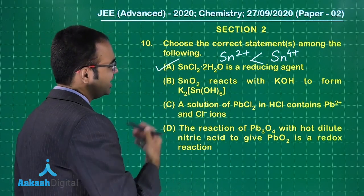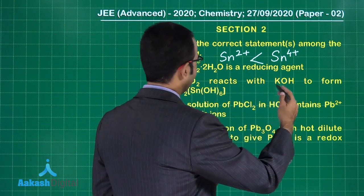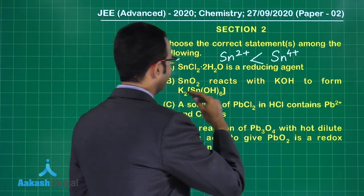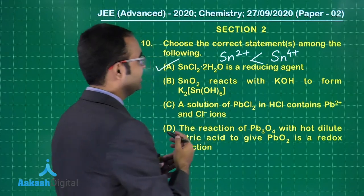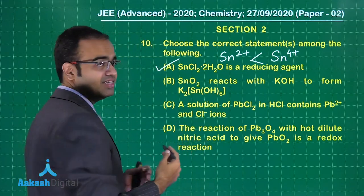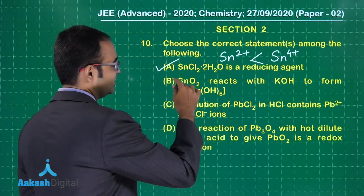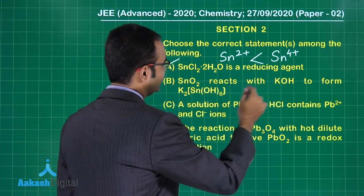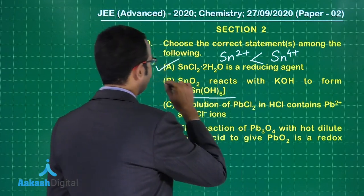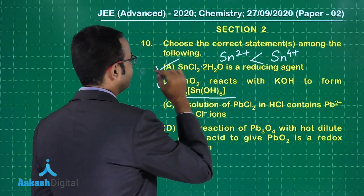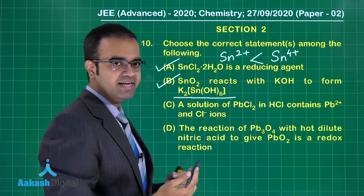Second option: SnO₂ reacts with KOH to form K₂Sn(OH)₆. Yes, this is correct. If you treat SnO₂ with KOH, this will be the compound obtained. So the second option is also correct.